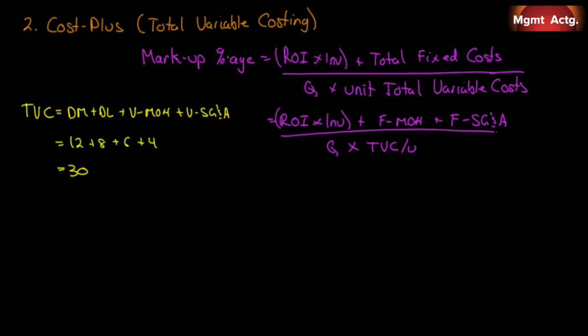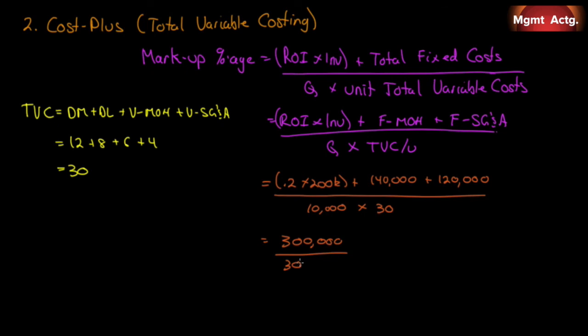So let's substitute that in to our equation over here. Our ROI, remember we still want 20%. Our investment is still $200,000. Plus our fixed manufacturing overhead is $140,000. That was included in our cost last time. Now it's in the numerator. Plus our fixed SG&A was $120,000. Over the same 10,000 units that we're going to do, but this time the cost is only $30,000. So if you expand out the top, we get $40,000 here, plus $140,000 is $180,000, plus $120,000 is $300,000. And we see that the bottom is, the numerator is $300,000 as well, which equals 1, or 100%.